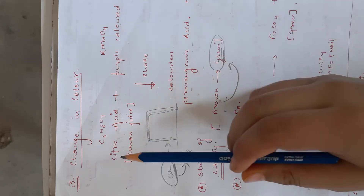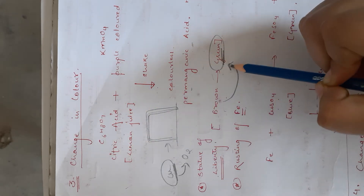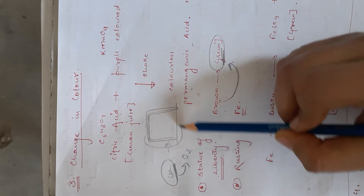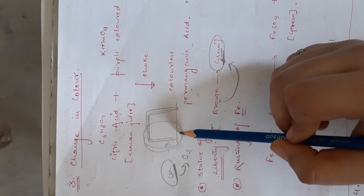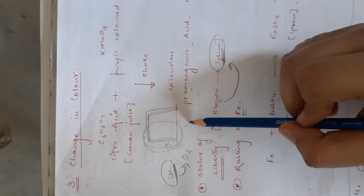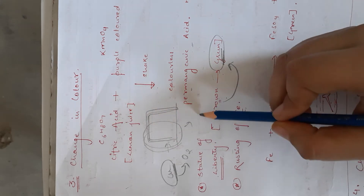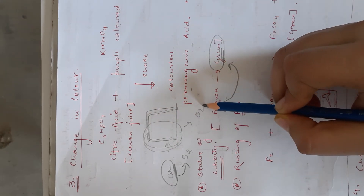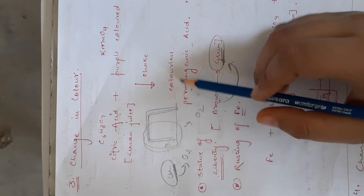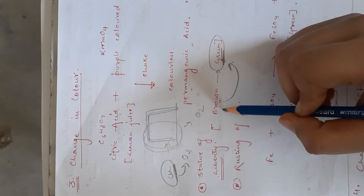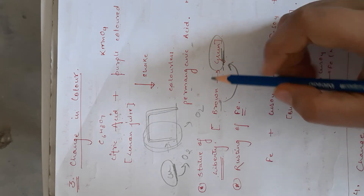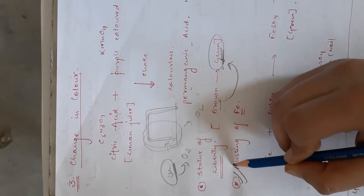So a change in colour is observed because the covering of the Statue of Liberty is a metal that reacts with air, which is oxygen. A change in state is observed — it is a type of chemical reaction due to which the colour changes from brown to green. The same applies to rusting of iron.